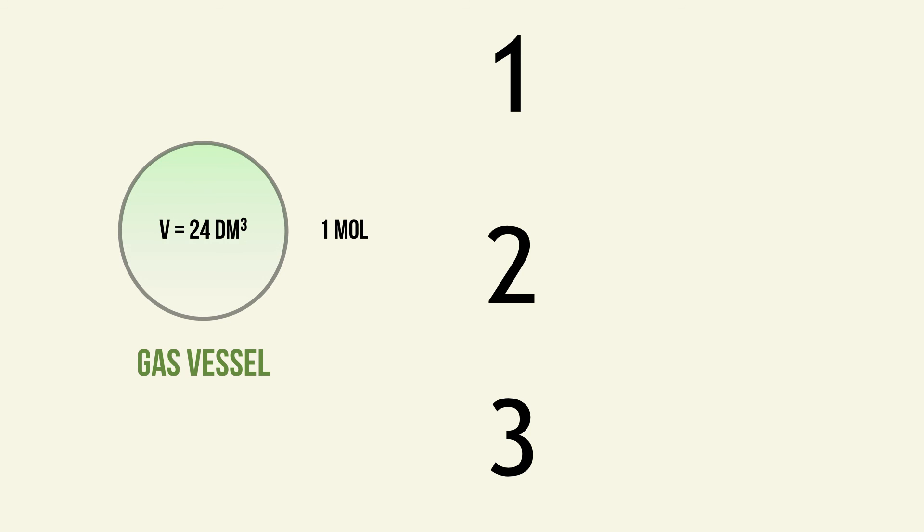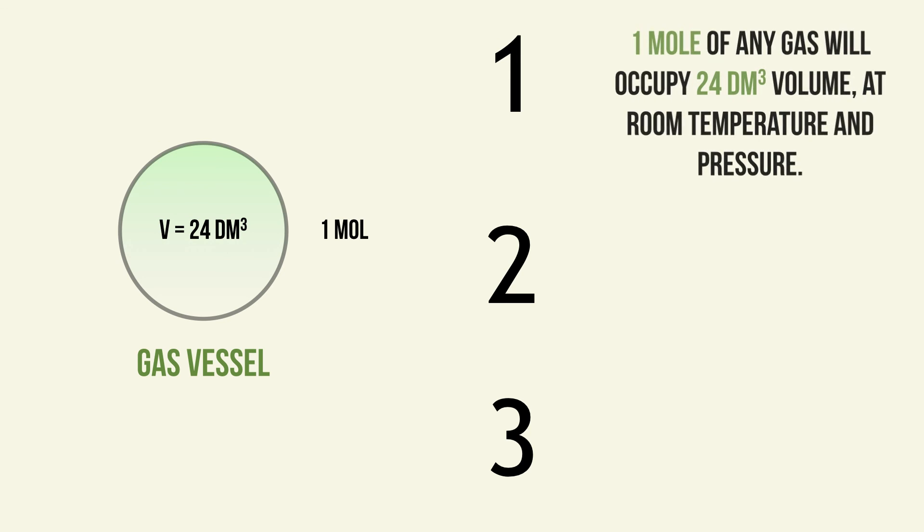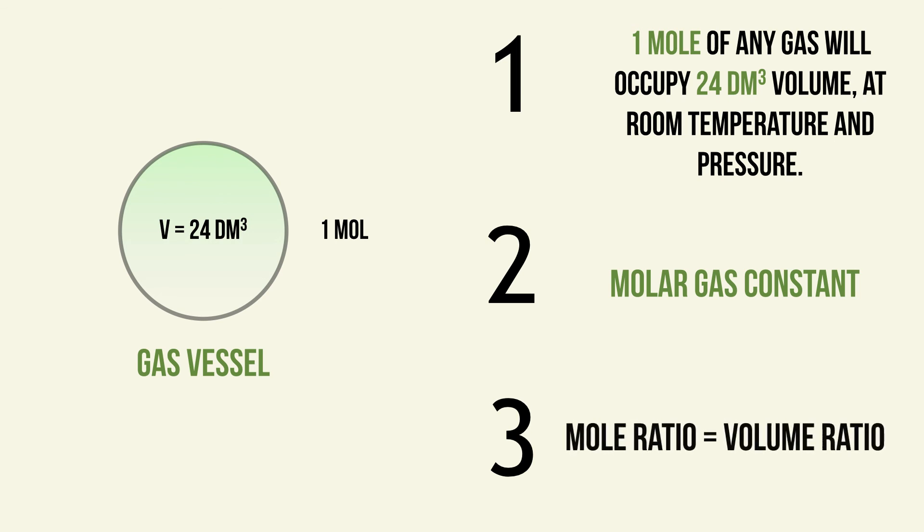To summarize: one mole of any gas will occupy 24 dm³ of volume at room temperature and pressure — this is the molar gas constant, and it is based on an assumption. And if all the products and reagents in a reaction are gases, the mole ratio will be equal to the volume ratio. Thank you very much for watching, and good luck in your examinations.